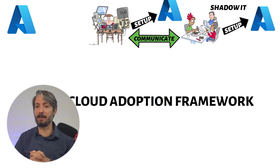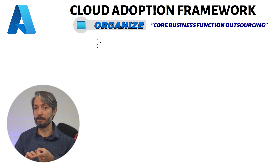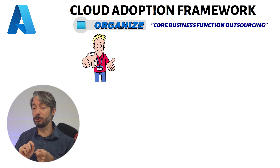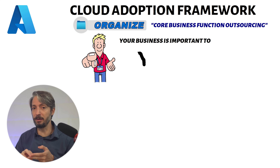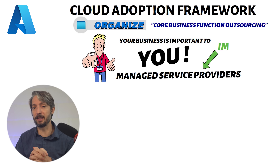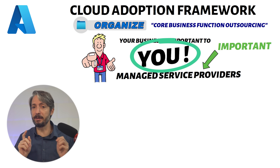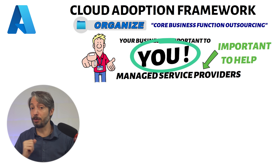The next anti-pattern is definitely one of the most important ones: core business function outsourcing. Nobody cares about your business more than you do. Consulting partners and managed service providers (MSPs) play an important role in the cloud journey. However, make sure that decisions are taken by your company, especially when it involves critical design areas. External partners are there to speed up and help you along the cloud adoption journey — they will advise you on decisions, but ultimately your company is responsible for taking those decisions.